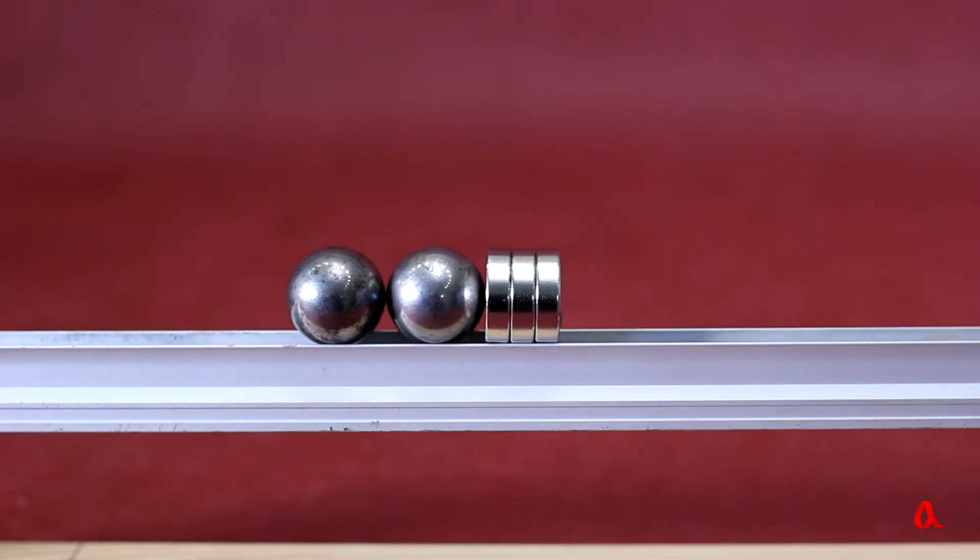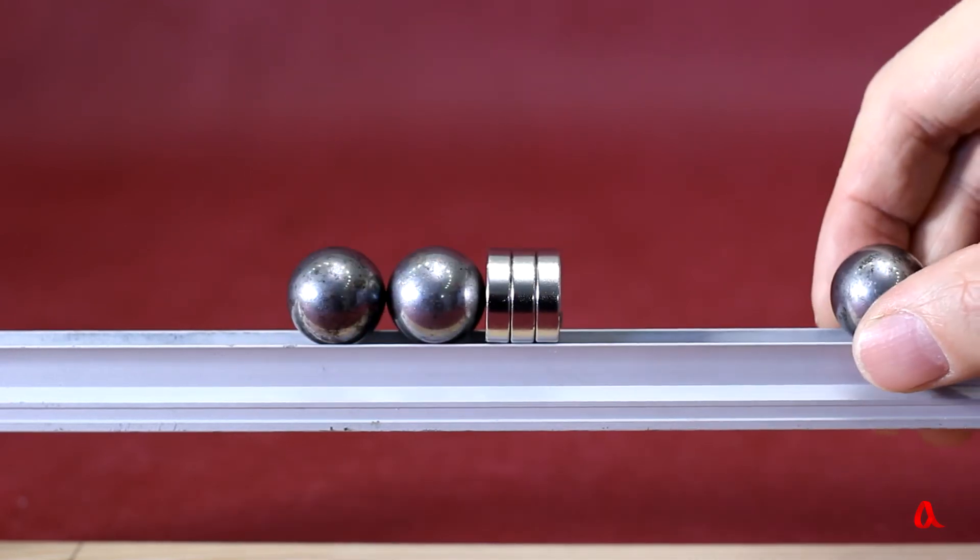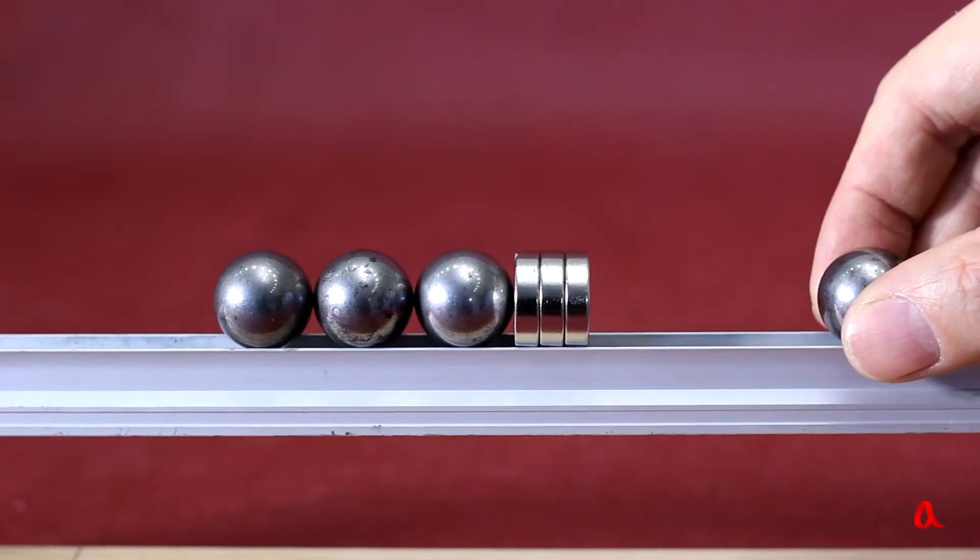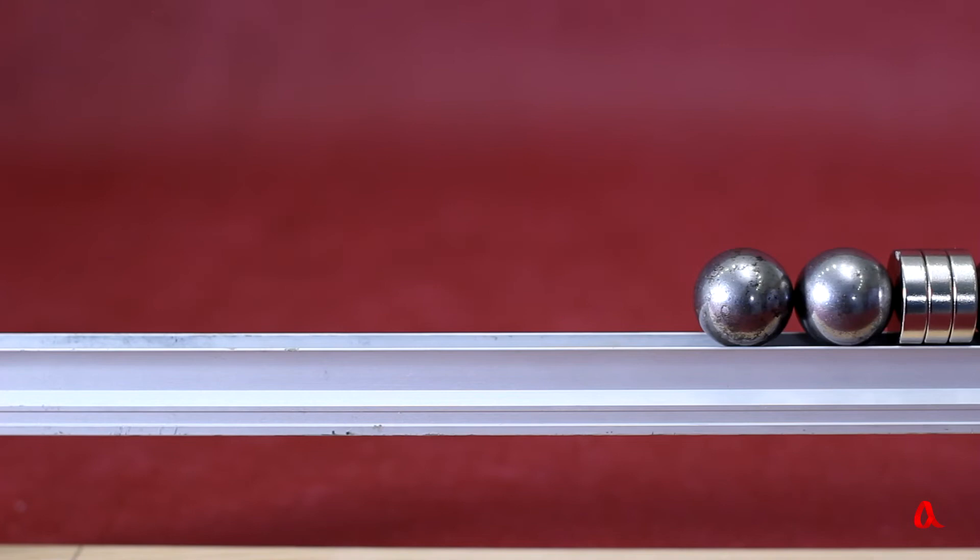But when there are two balls behind the magnet, the second one will bounce off with considerable speed after the strike. All the more so if there are three or four balls behind the magnet.